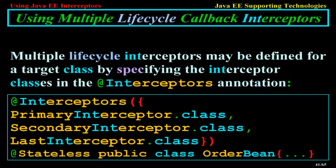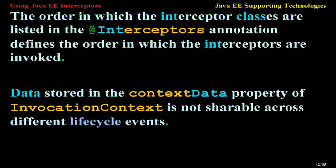Using multiple lifecycle callback interceptors: multiple lifecycle interceptors may be defined for a target class by specifying the interceptor classes in the Interceptors annotation, such as @Interceptors({PrimaryInterceptor.class, SecondaryInterceptor.class, LastInterceptor.class}). The order in which the interceptor classes are listed defines the order in which they are invoked. Data stored in the context data property of invocation context is not shareable across different lifecycle events.